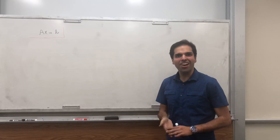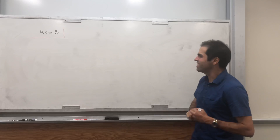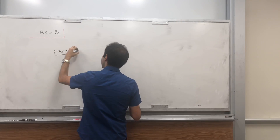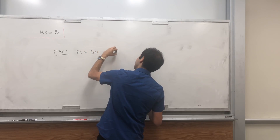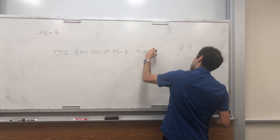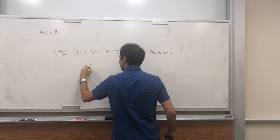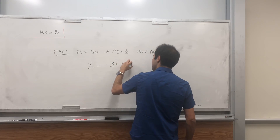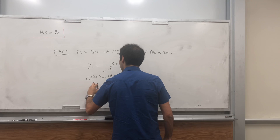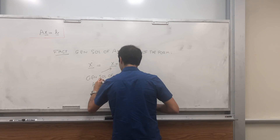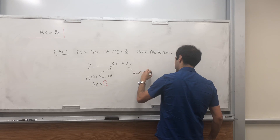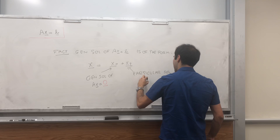Thanks for watching. Today I would like to talk about one of my favorite facts in linear algebra. The general solution of Ax equals b is always of this form: x equals x0 plus xp, where x0 is the general solution of Ax equals 0 — sometimes called the null space of A — plus a particular solution of Ax equals b.